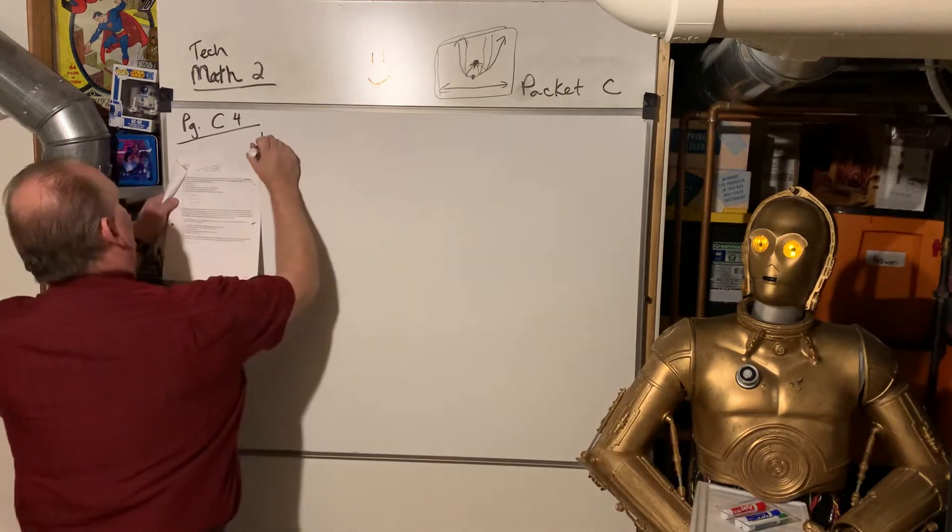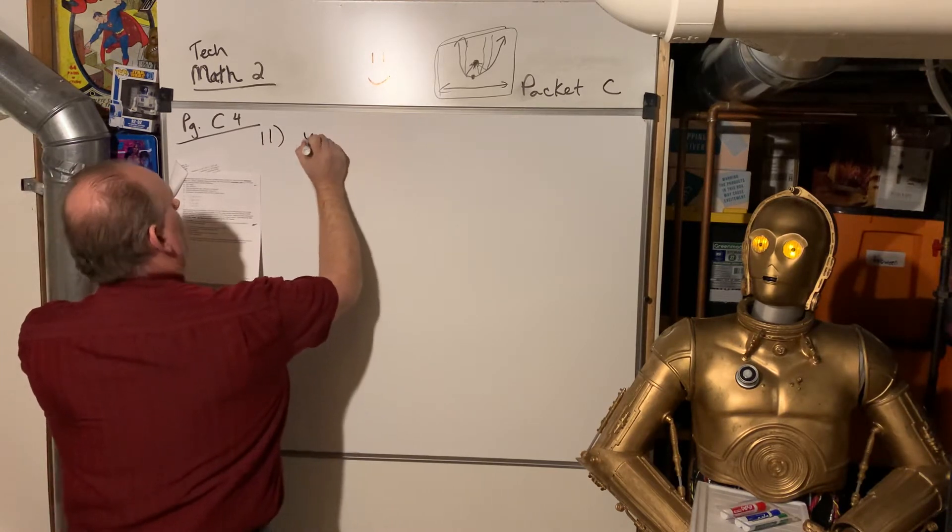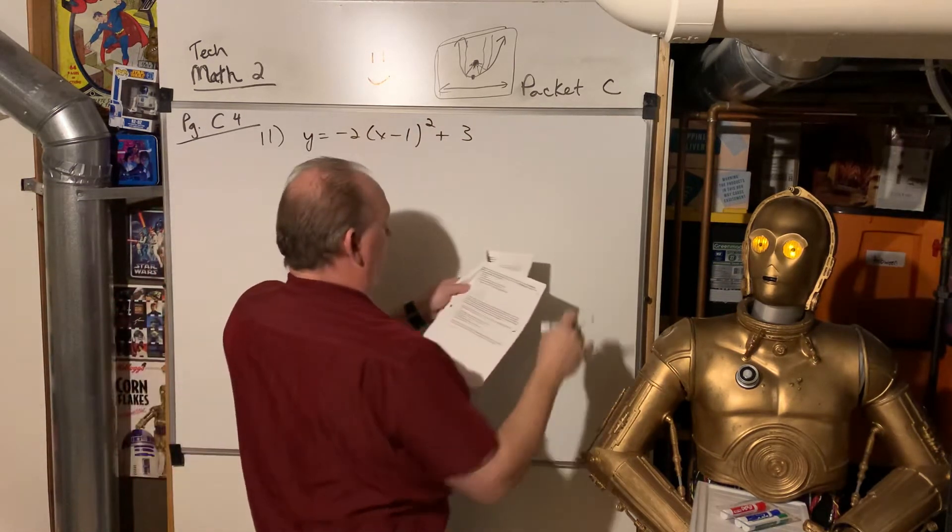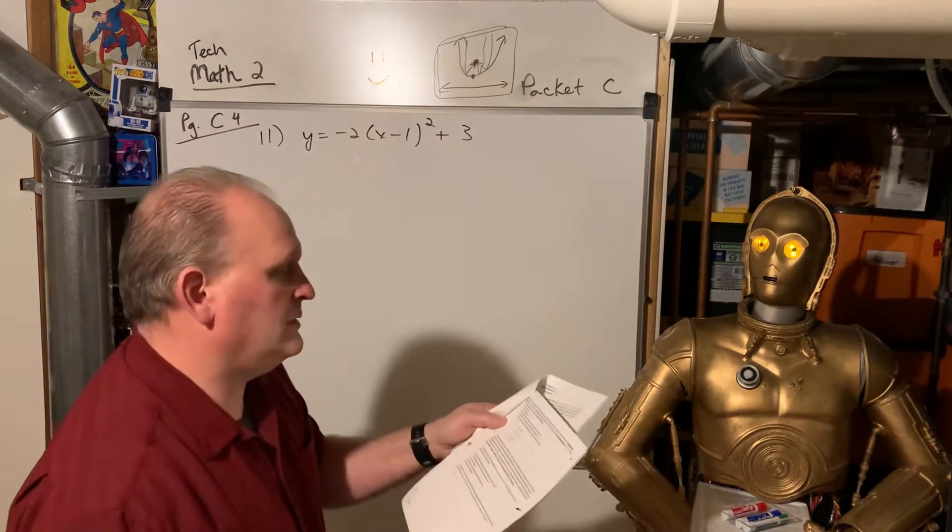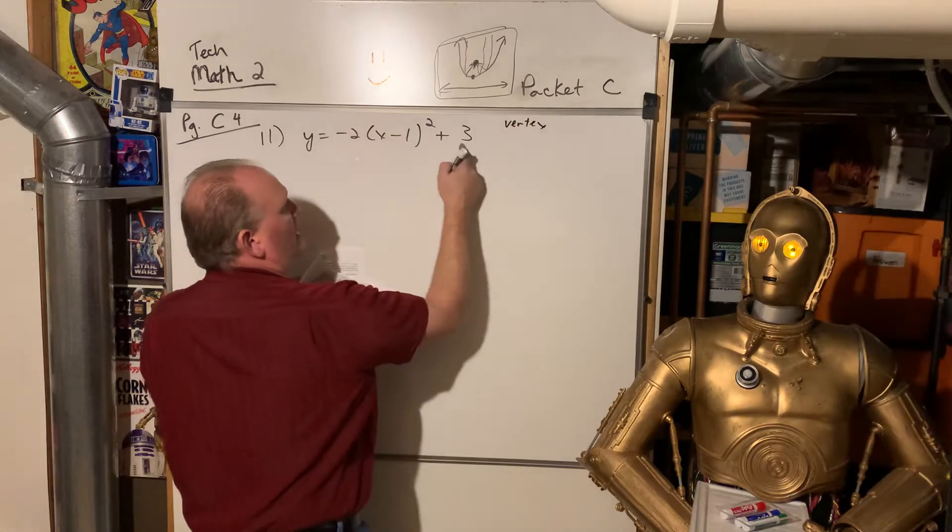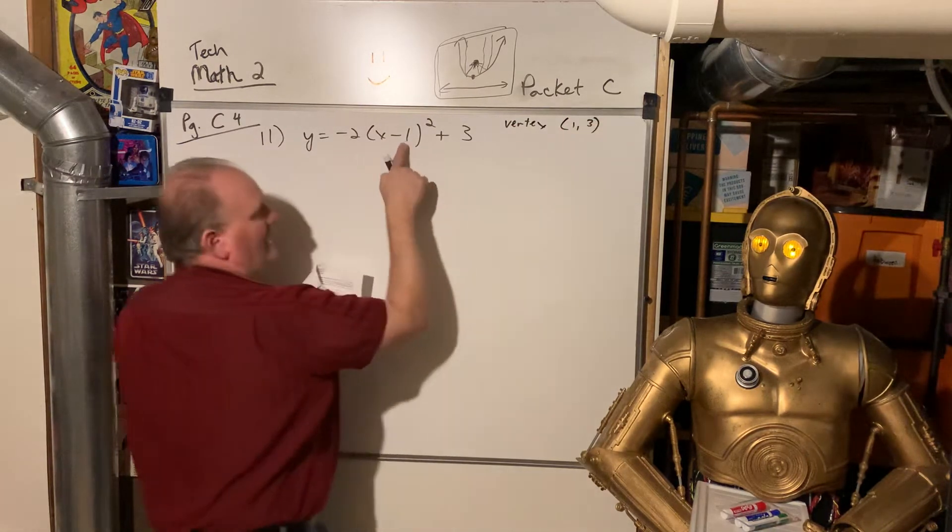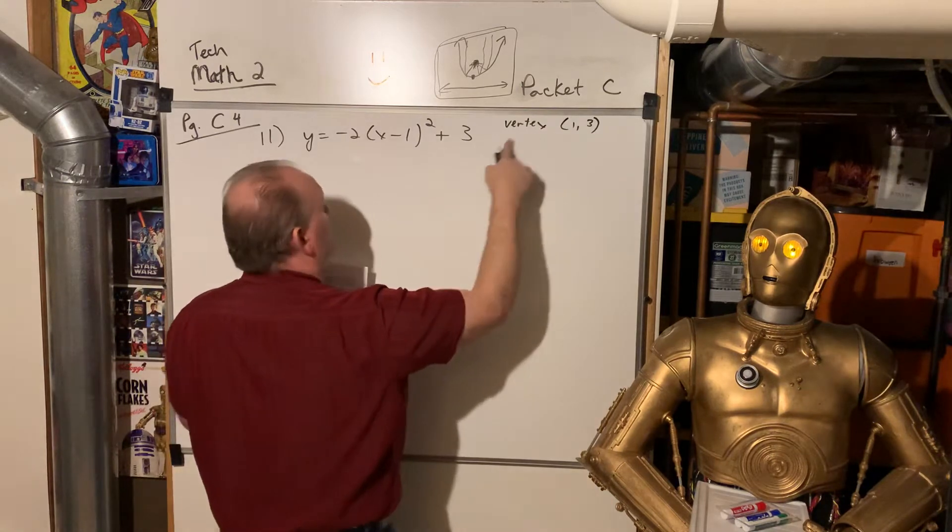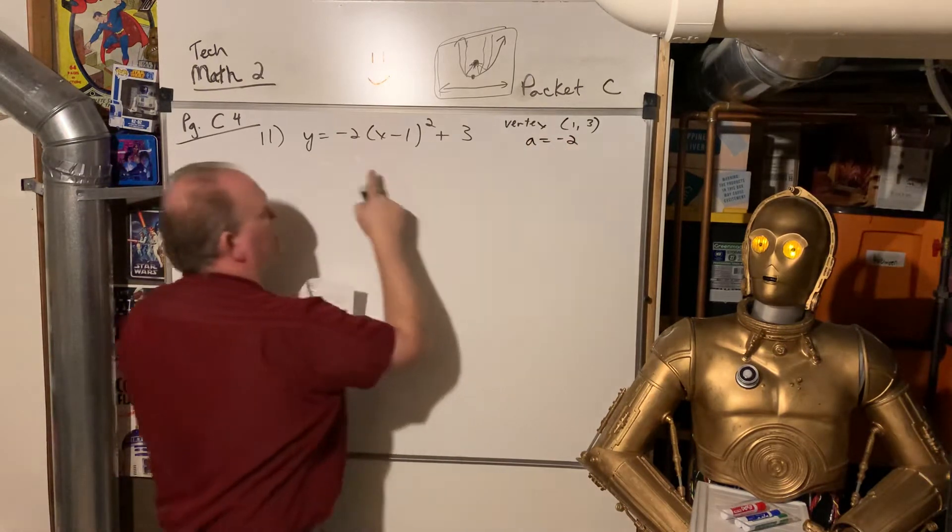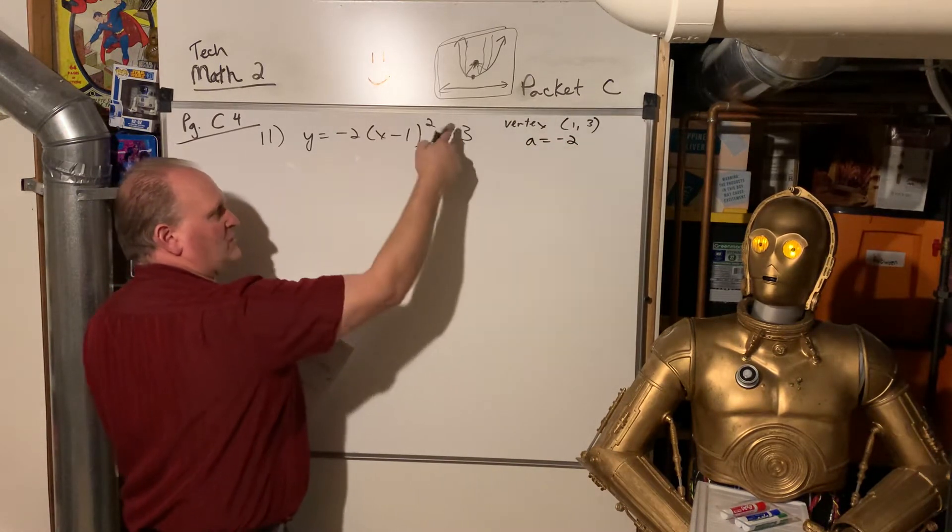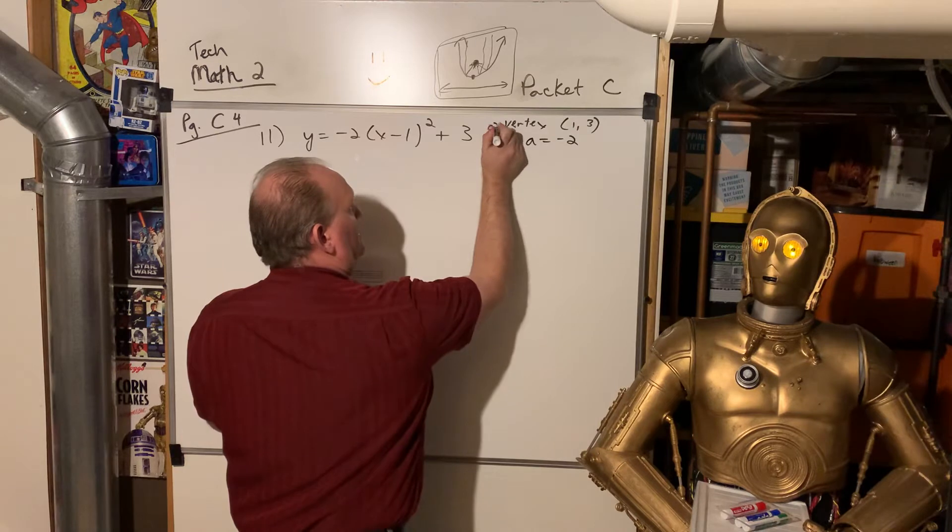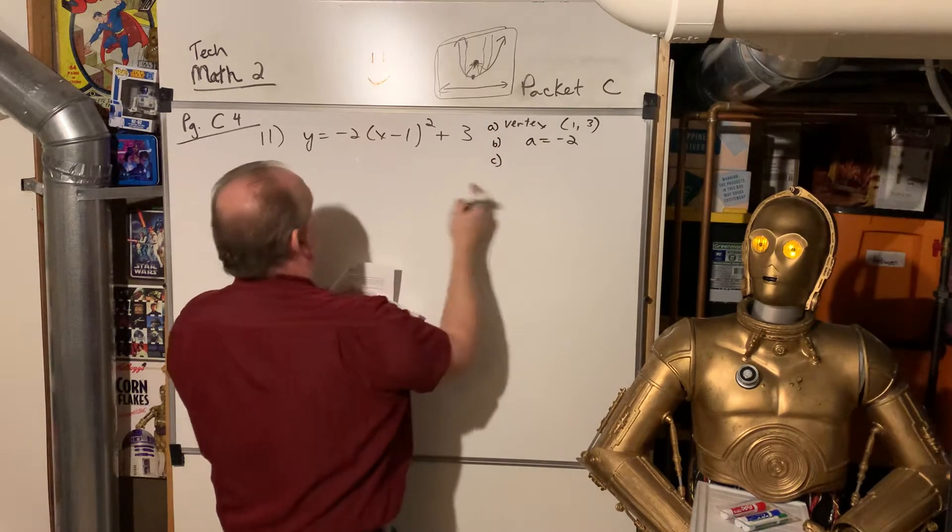Number 11. They want us here, y = -2(x - 1)² + 3. So what's the vertex? They want the vertex of this. That's going to be 1, 3. So it's the opposite of that number and that number for x and y. They want to know the value of A. A is equal to negative 2. A is just the multiplier in front of this squared term. They want to know, does the parabola open up or down? It's going to open down.